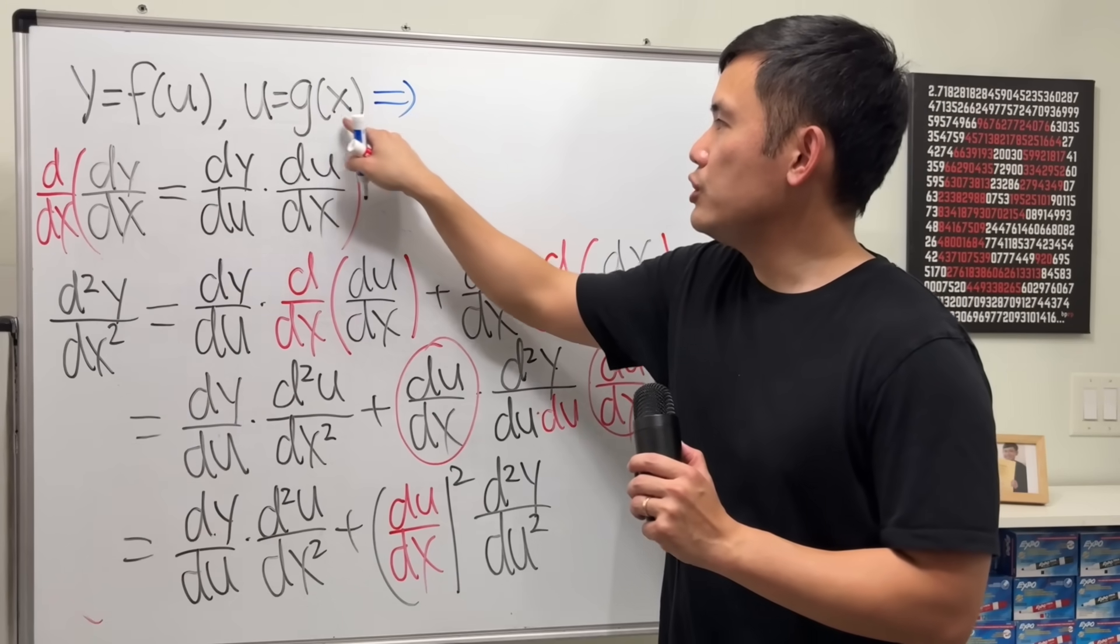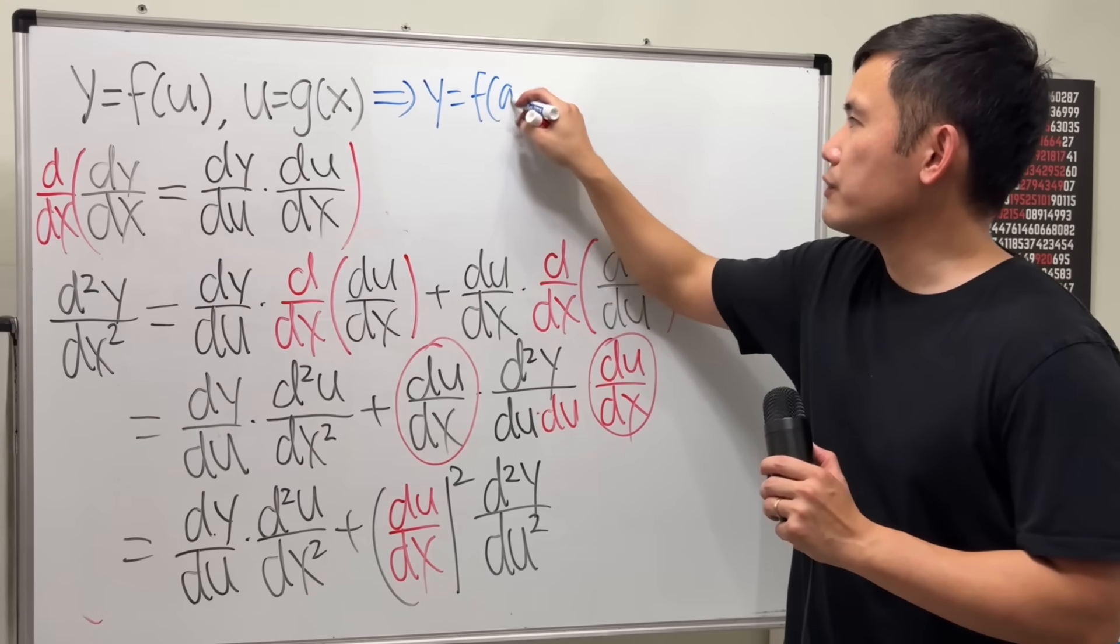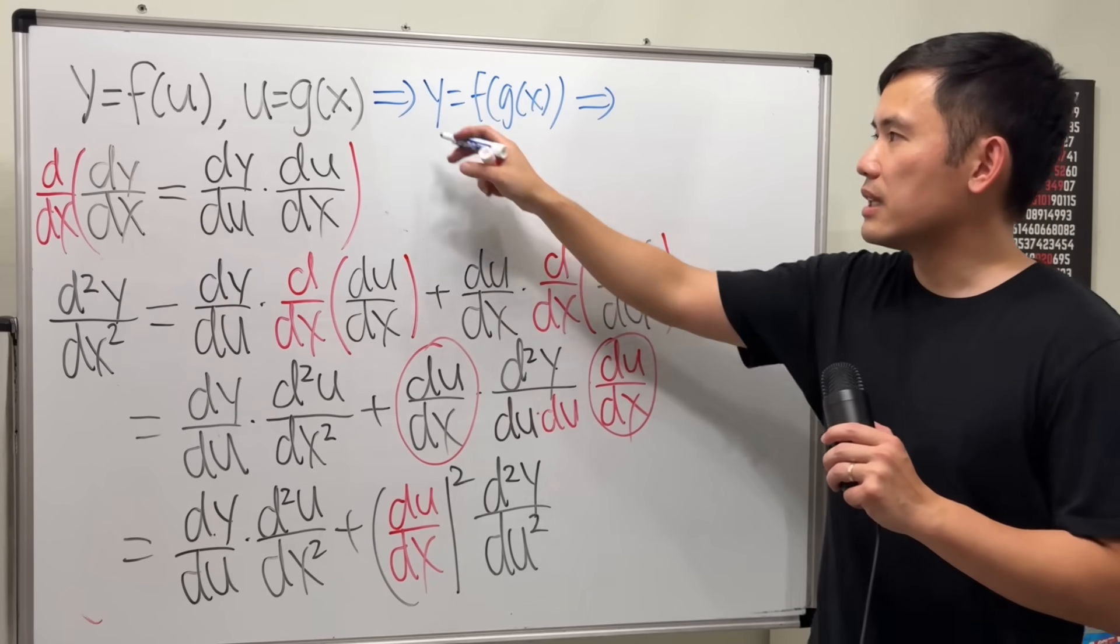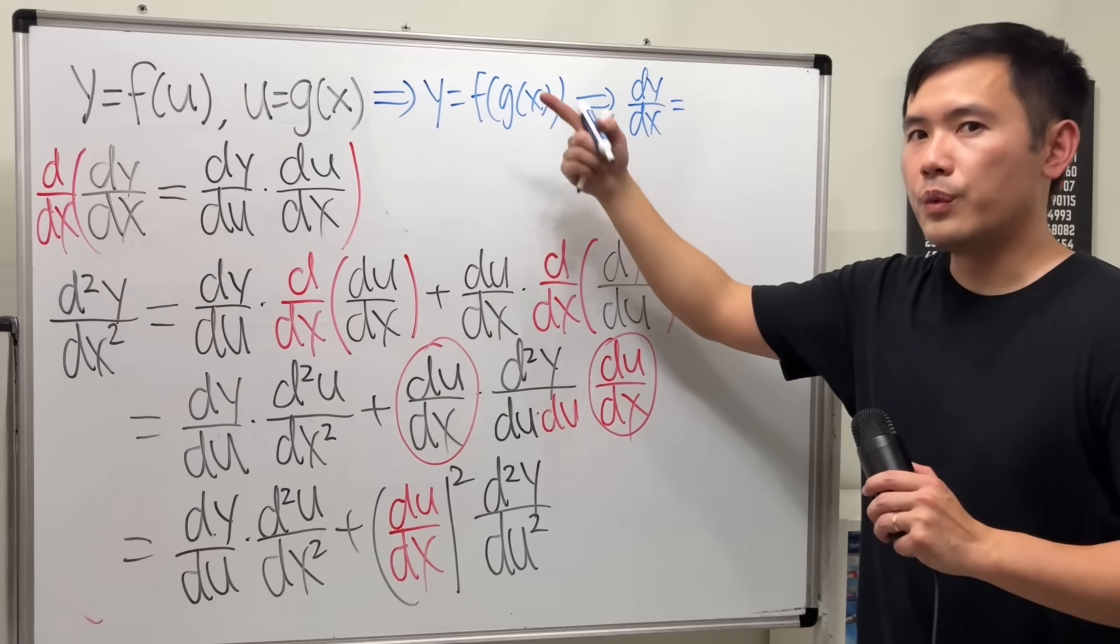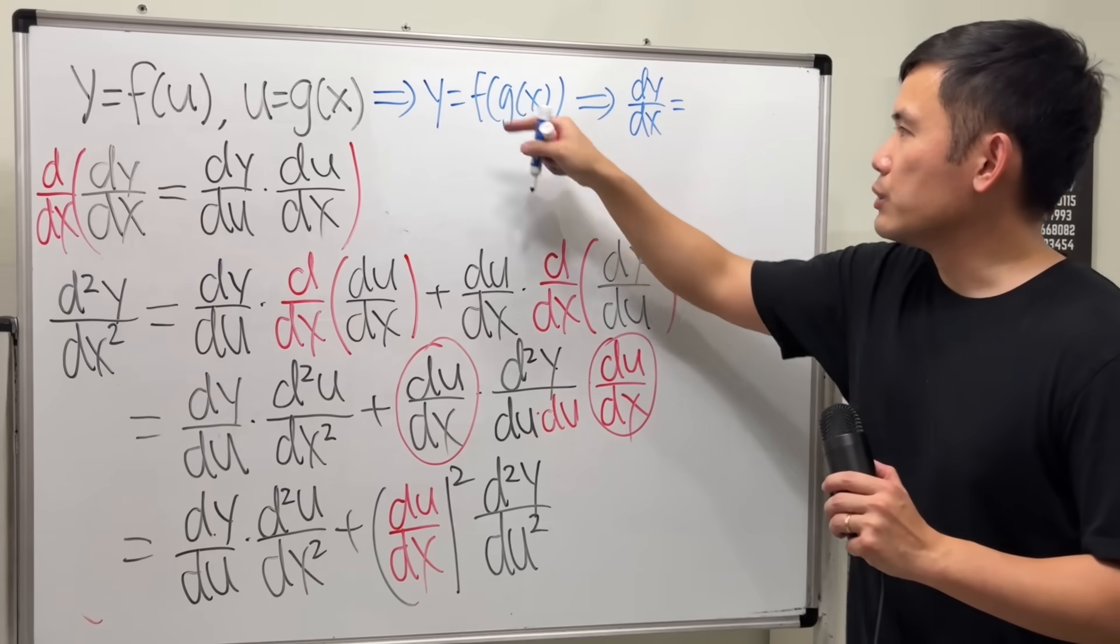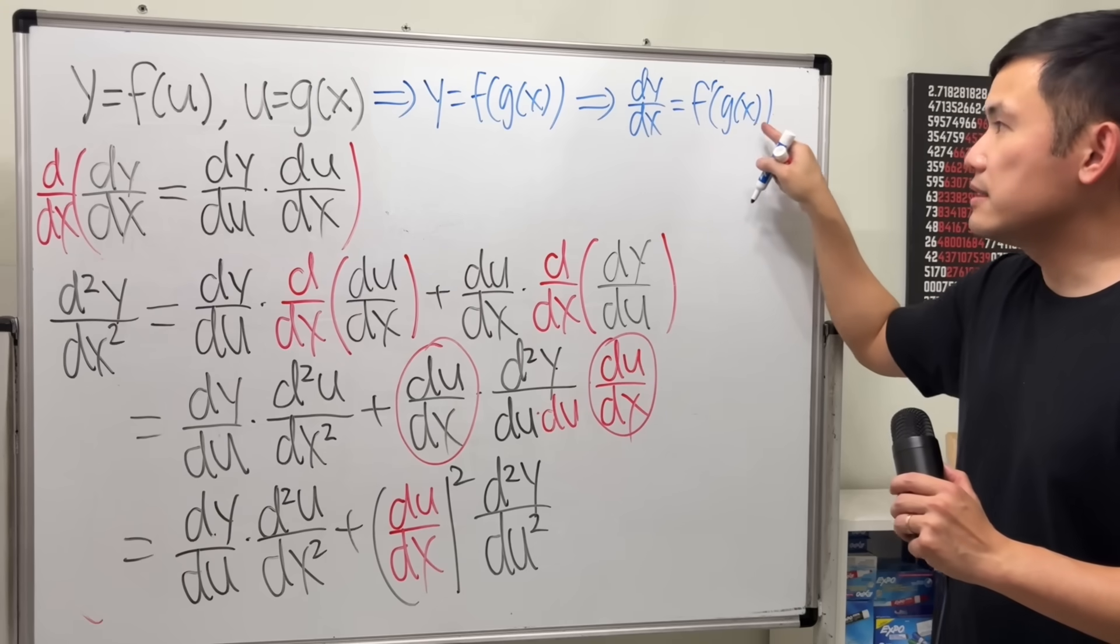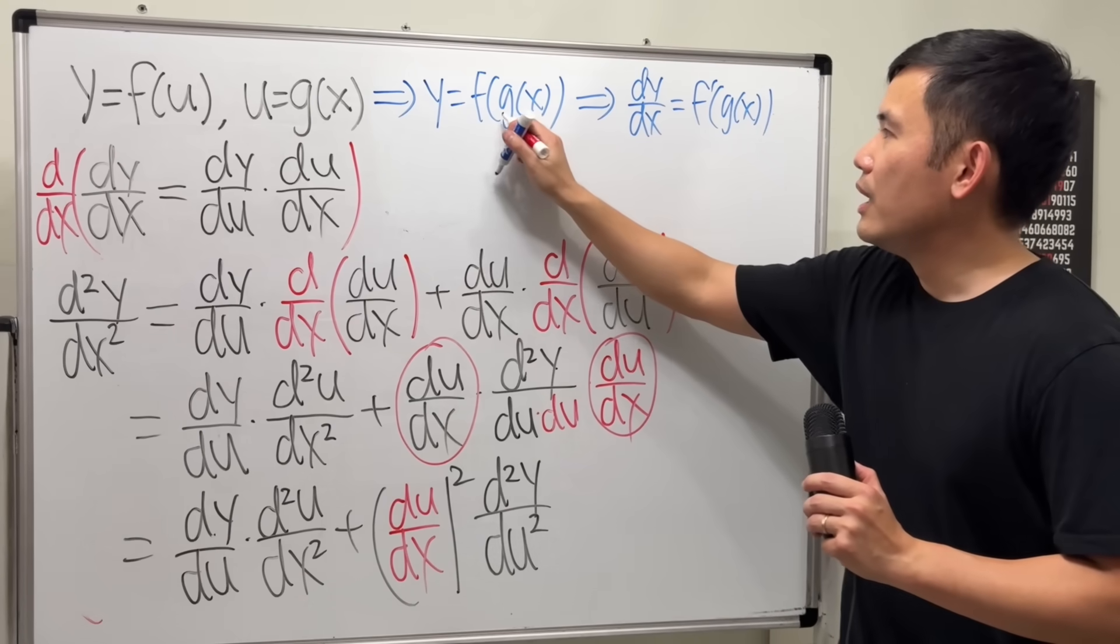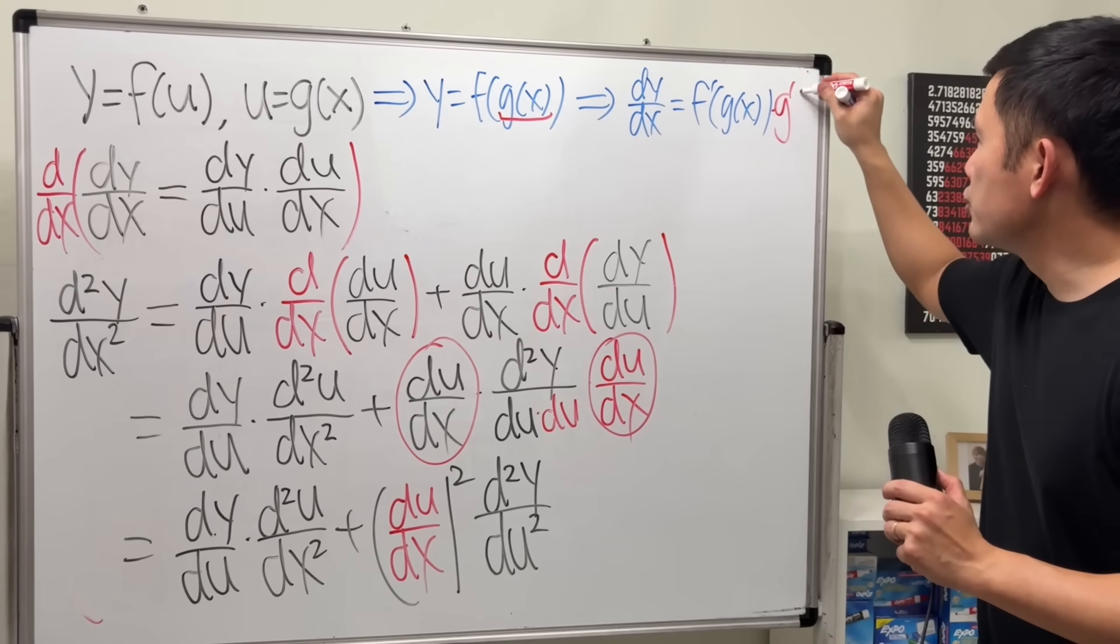Firstly, I'm going to put g of x into here, so we get y equals f of g of x. And then, differentiate this. On the left-hand side, I will just put dy dx. But for this, when we differentiate that, I will just put prime for the f. And the inside stays the same, but what else do we need to do? The chain rule. Look here what the inside is. Differentiate that and multiply it. And that's g prime of x.